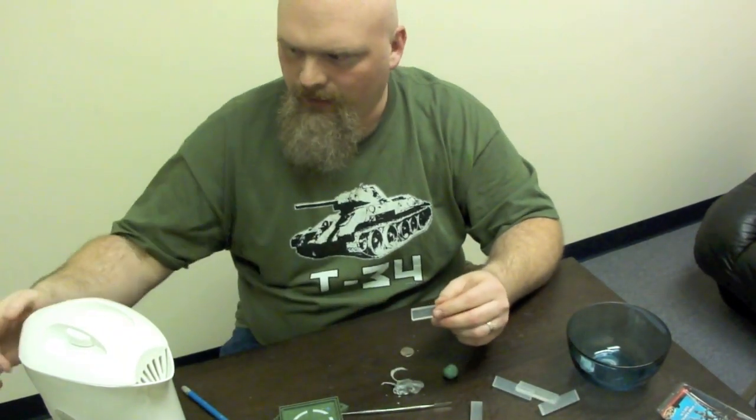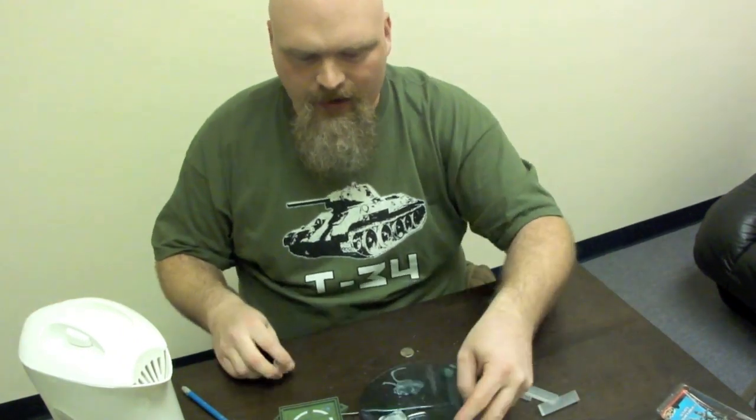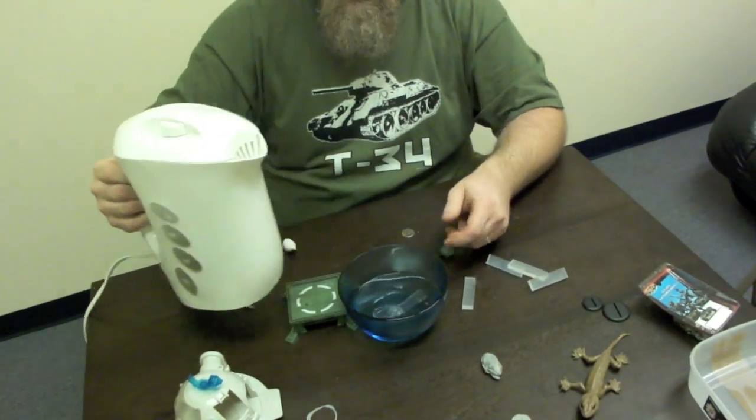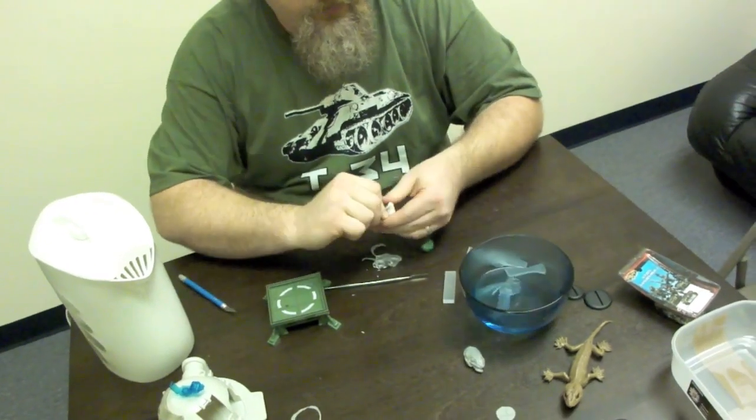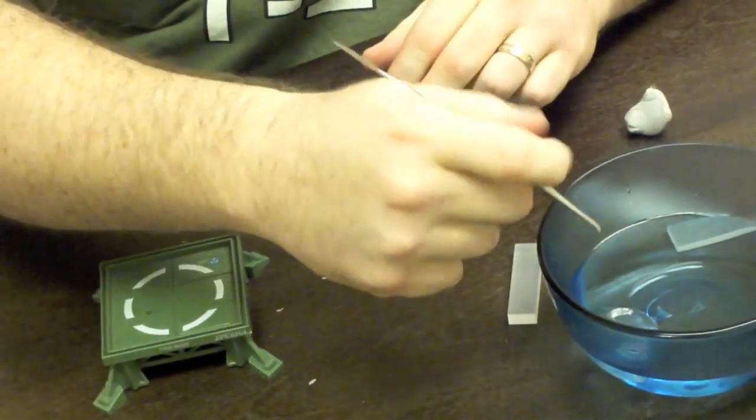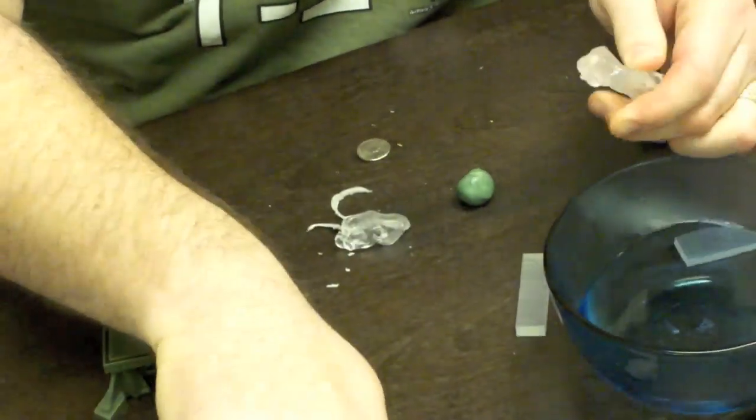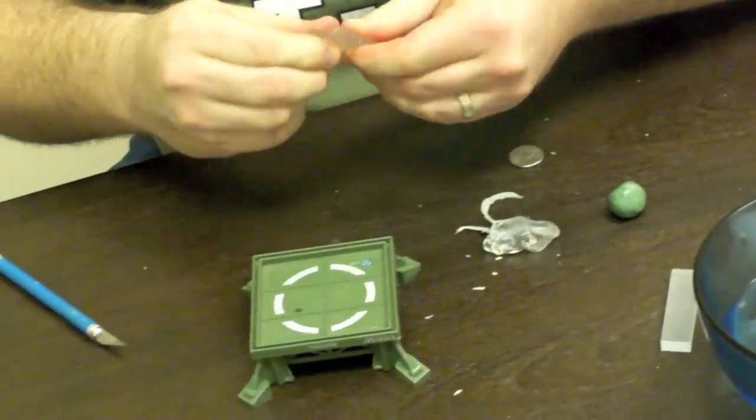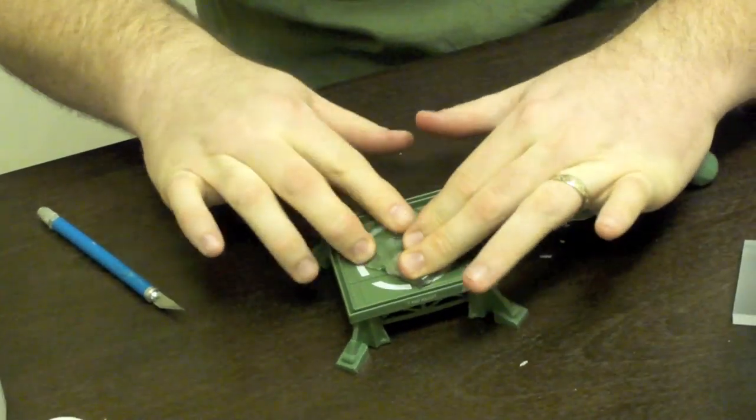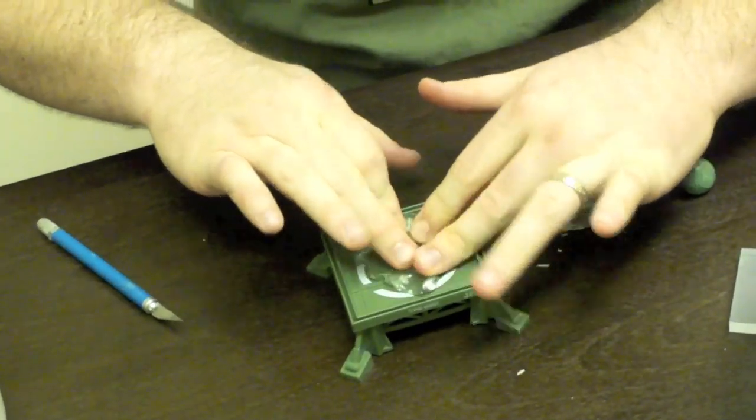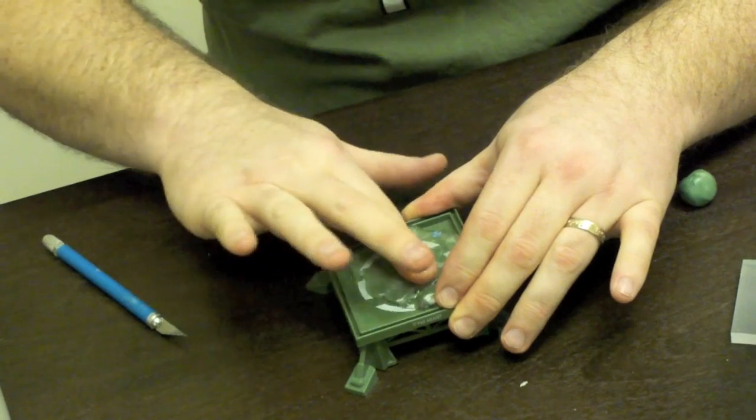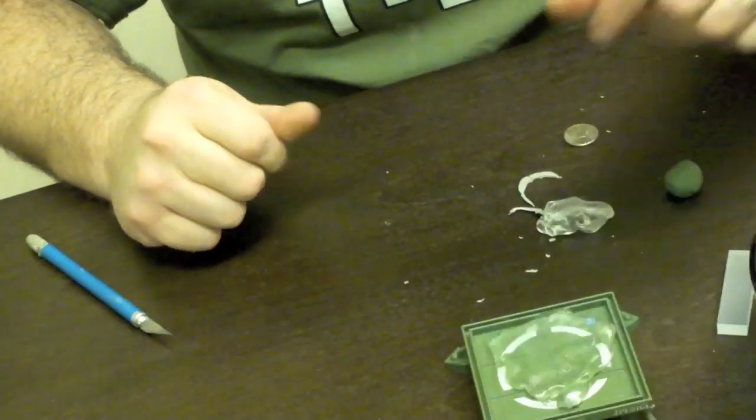And how it works is you just add hot water. Mix my putty while that's softening up. Softens up nicely. Just press it firmly onto anything you want to make a mold of. Set that aside to cool while we make something else.